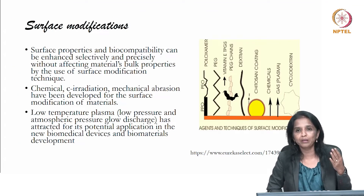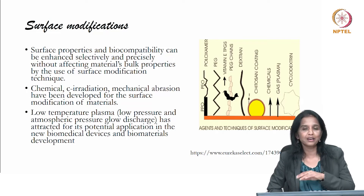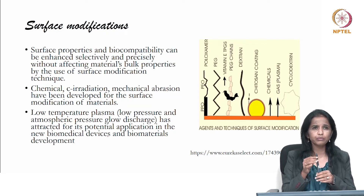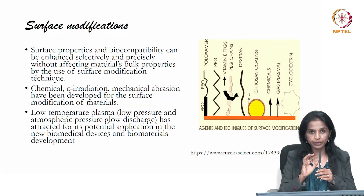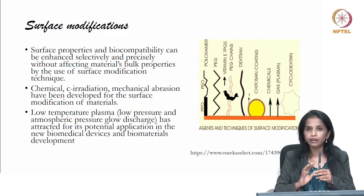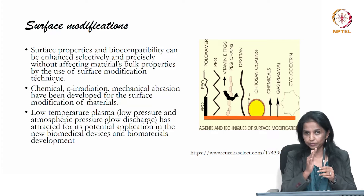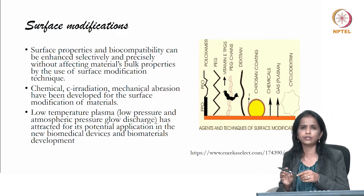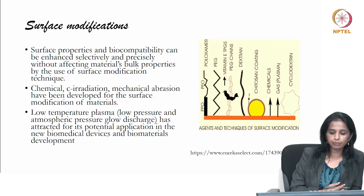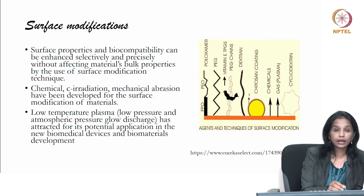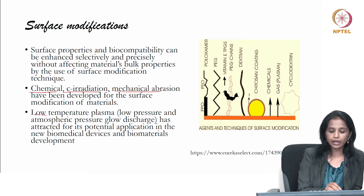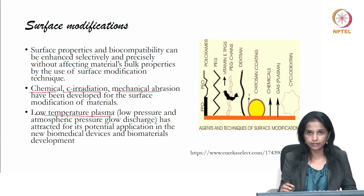We have seen metals, polymers, polymer blends, composites, and coatings. Surface modification is different from coating — it involves altering the surface itself. A simple modification would be to make the surface rough; as it becomes rougher, the surface area increases. This increased surface area improves cell attachment and proliferation. Surface modifications improve biocompatibility and are done by chemical treatment, irradiation, mechanical abrasion, or by applying low-temperature plasma to the surface.